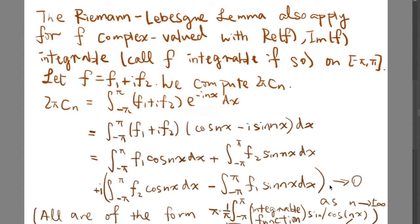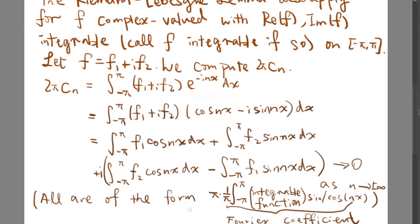Indeed, such expressions should tend to zero. Why? Because they are of the form π times 1 over π times the integral from negative pi to pi of an integrable function times sin or cos nx. Remember, this is indeed the Fourier coefficient of the real Fourier series. Therefore, all these four terms will tend to zero, and such a complex number will also tend to zero as n tends to positive or negative infinity.